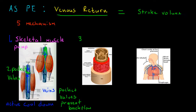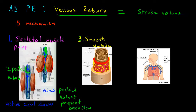Mechanism number three is smooth muscle. Smooth muscle surrounds the veins and venules. Just as skeletal muscle helps pump blood upward, smooth muscle can constrict and help pump blood back up through the pocket valves, through the venules and veins, and back to the heart, thereby maintaining venous return. So smooth muscle constriction is our third mechanism.